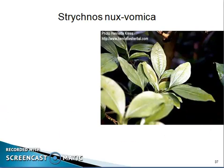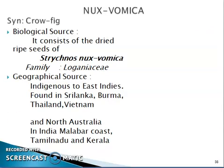The next drug is Strychnos nux-vomica. This is the plant of nux-vomica. Synonym: nux vomica. Biological source: dry seeds of Strychnos nux-vomica, family Loganiaceae. Geographical source: indigenous to the East Indies; found in Sri Lanka, Burma, Thailand, Vietnam, and North Australia. In India, it is found along the Malabar coast, Tamil Nadu, and Kerala.